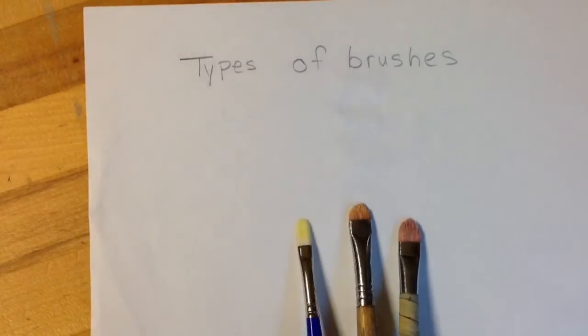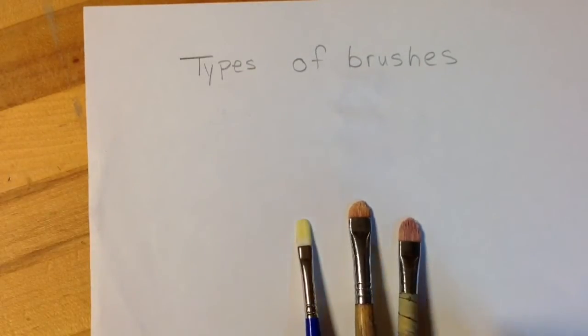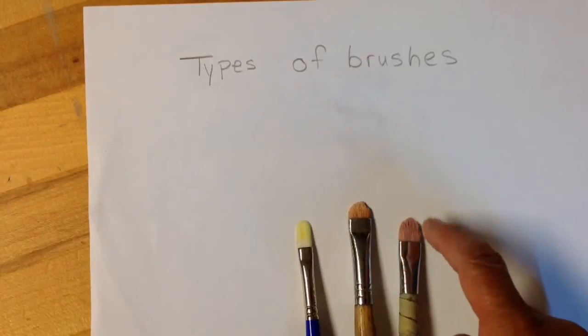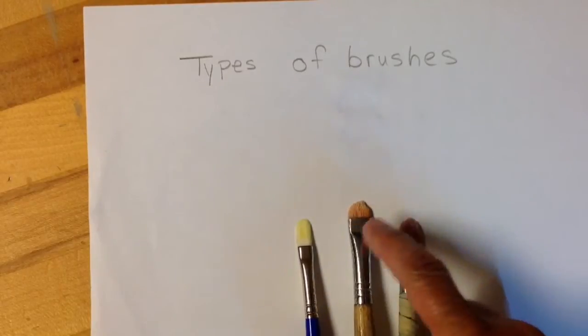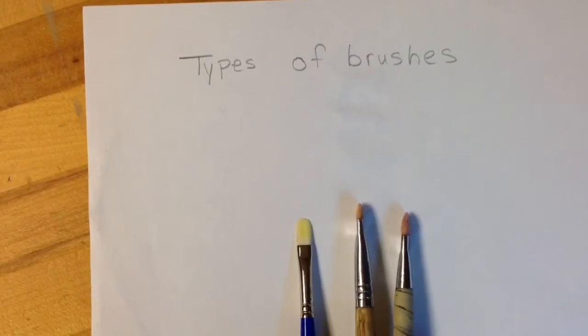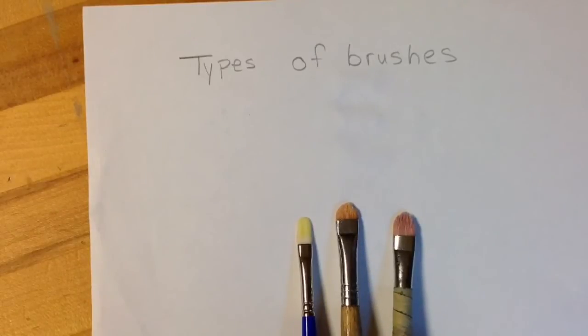Another type of brush is called a filbert brush. A filbert brush has a rounded top. It's still kind of flat on its side, but the top of it's more rounded.